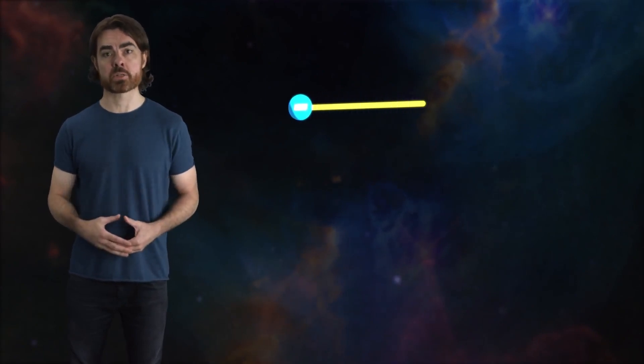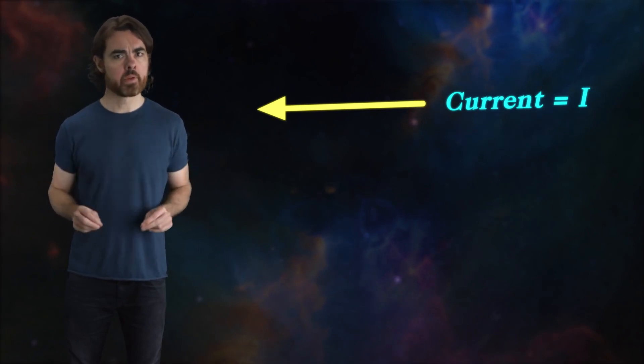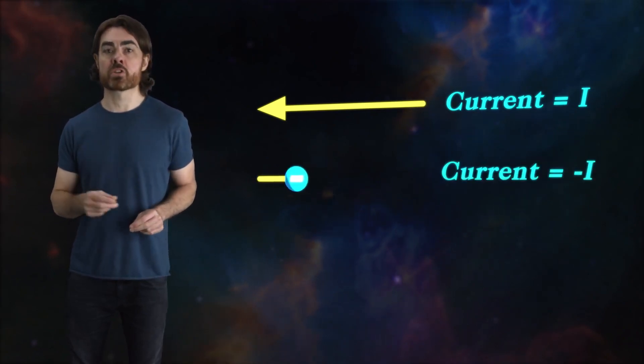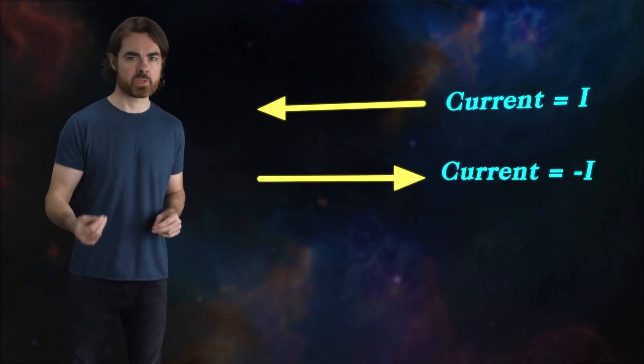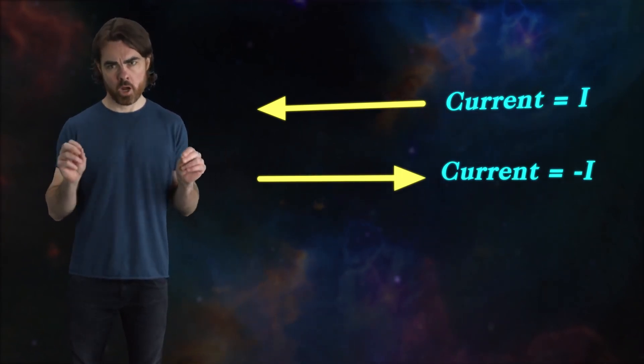For example, if a negatively charged electron is moving to the left, it produces some current, i. Then an electron moving to the right produces the same strength of current, but with the opposite sign, minus i.